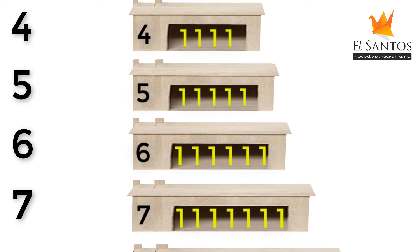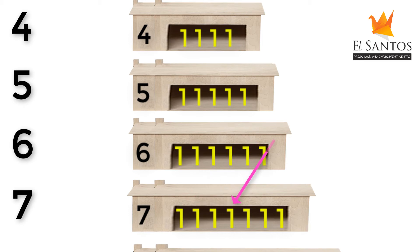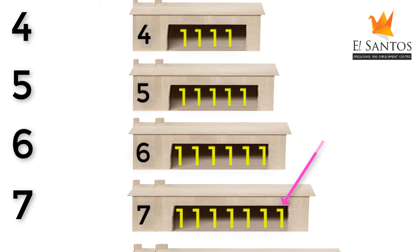The seven house has seven ones. Let's count them: one, two, three, four, five, six, seven. Seven ones.